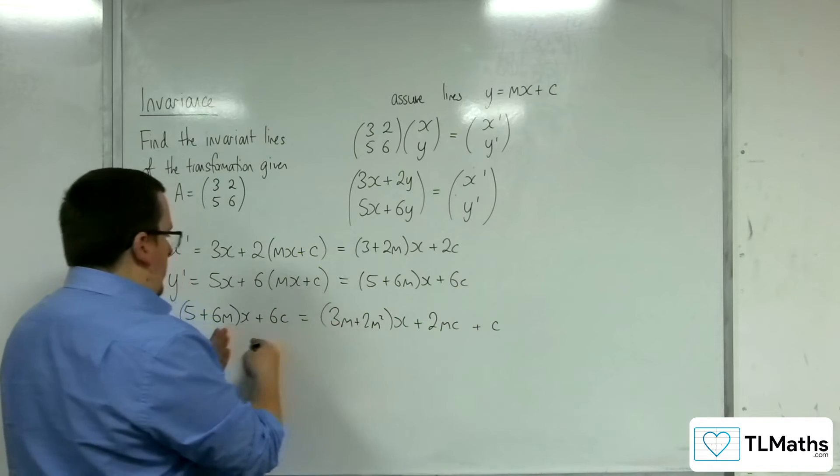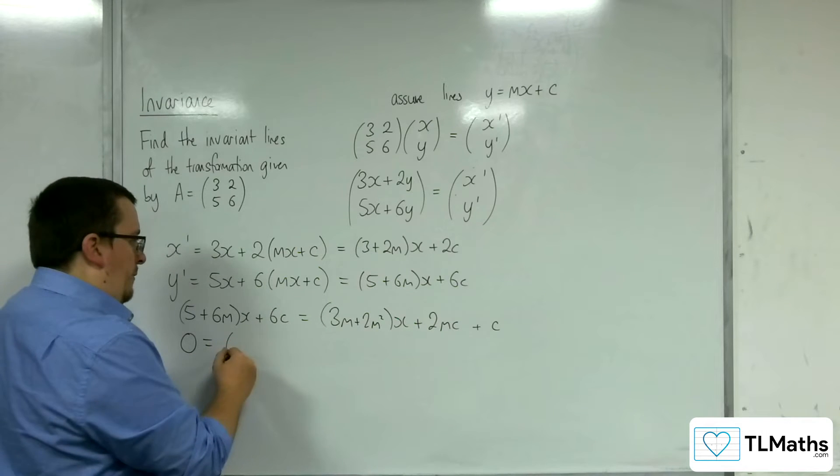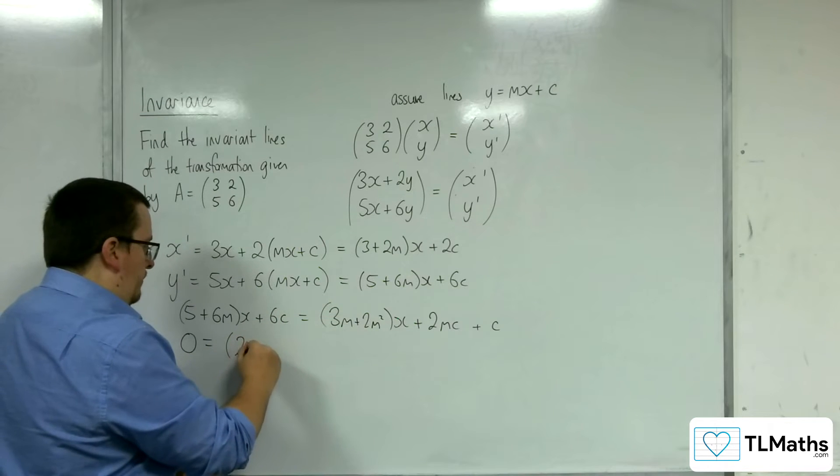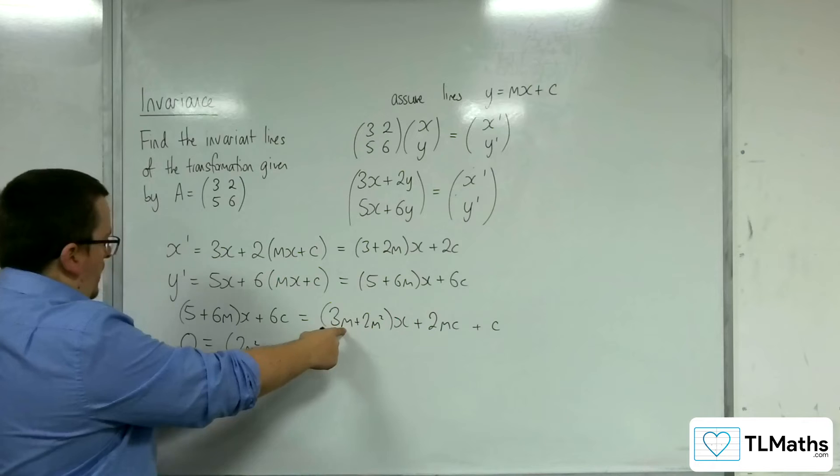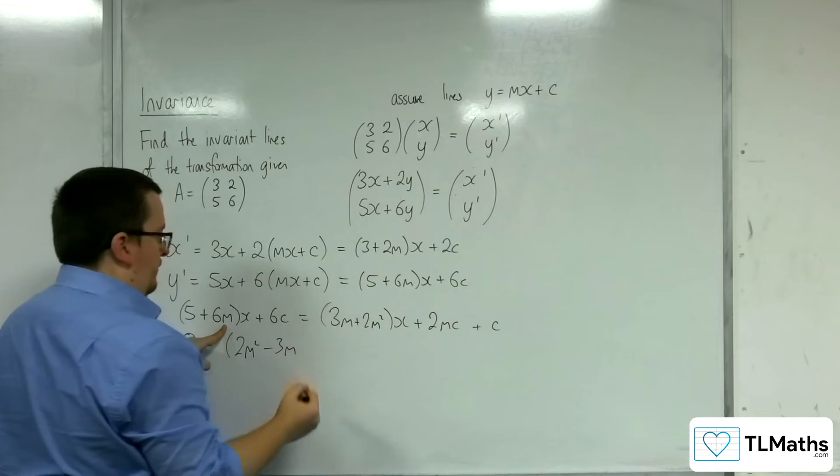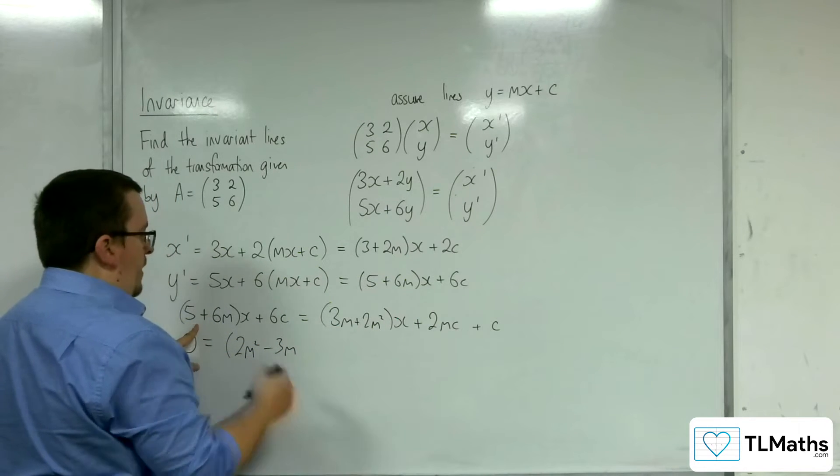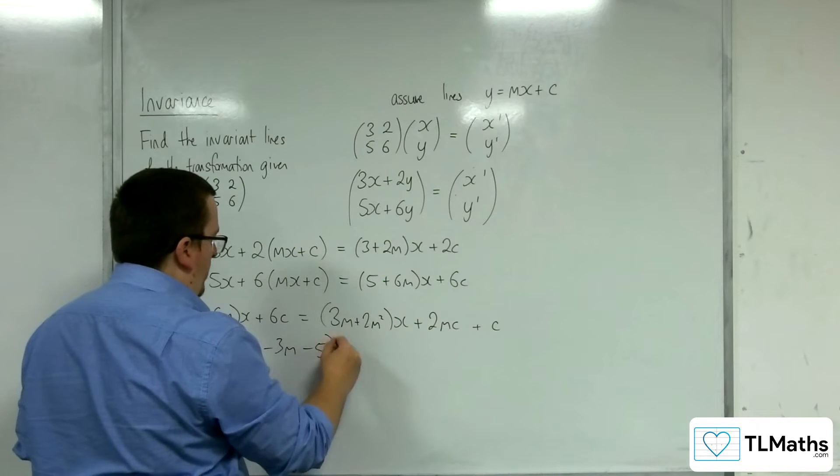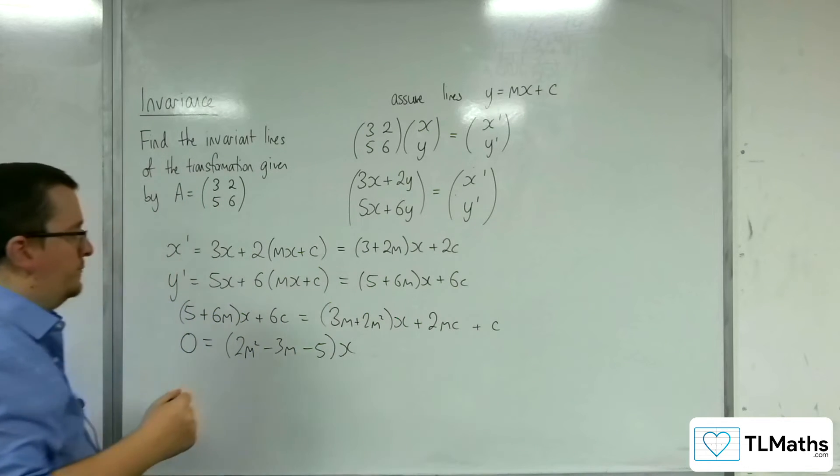So if I factorize both those brackets out, so we've got the 2m squared. I'm going to have the 3m take away 6m, so take away 3m. And I'm going to have this 5 that's moving over to the other side as well. So take away 5x.